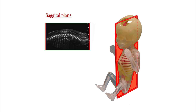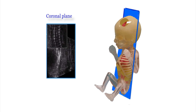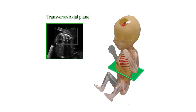The second plane, which you see in blue, is the coronal plane, which usually divides the fetus into anterior and posterior parts. And then the last plane is the transverse or axial plane, which you see here in green, that divides the fetus into an upper and lower part.